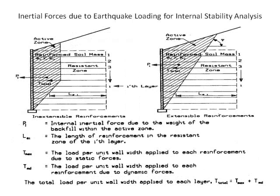Here we show the inertial forces due to earthquake loading for internal stability analyses. For inextensible reinforcements and extensible reinforcements, the failure wedges and active zones are different. This leads to the effective length of the geogrids or straps behind the active zones being different as well. Those effective lengths are the lengths used in calculating pullout resistance. Anything within the active zone should not be included in resistance to pullout.